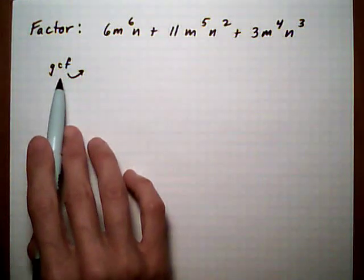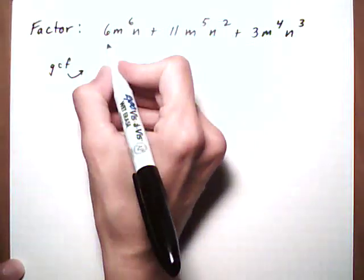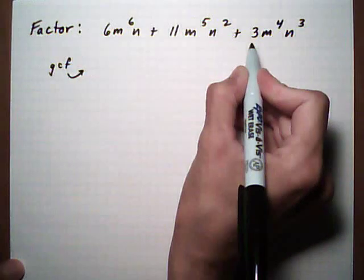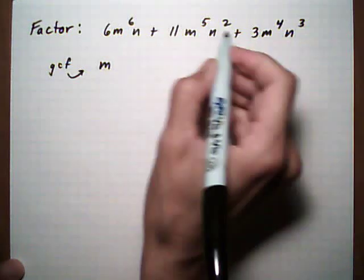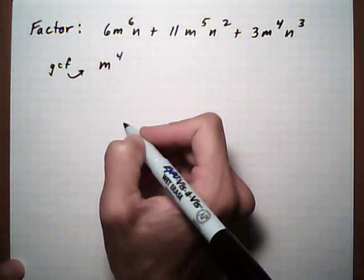As always, pull out a greatest common factor whenever possible. Let's see, the numbers don't have a common factor, but the variables do.